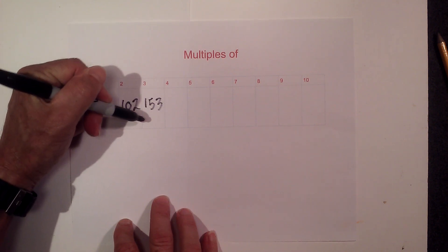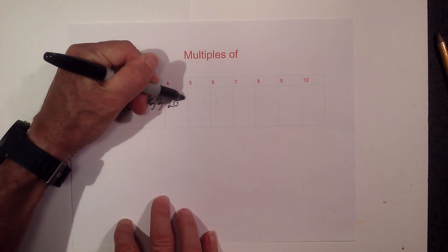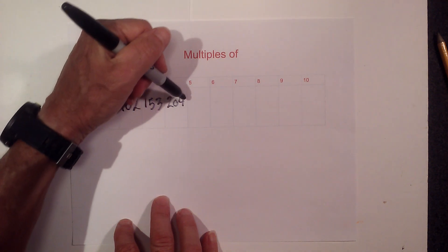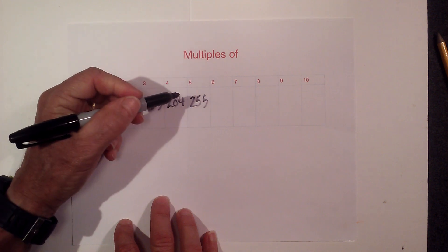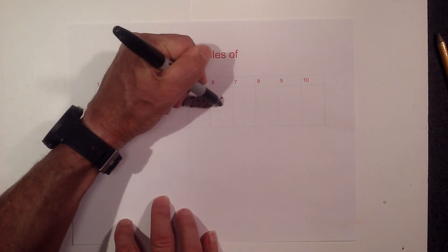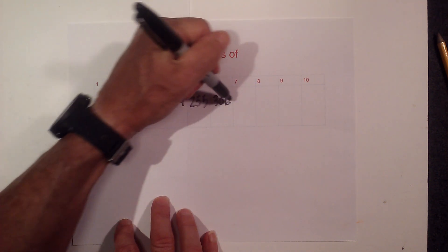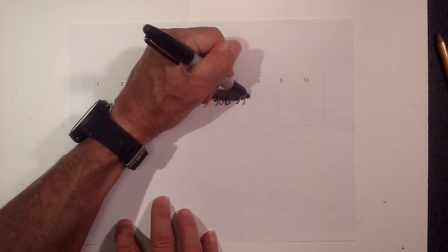4 is 204, times 5 is 255, times 6 is 306, times 7 is 357.